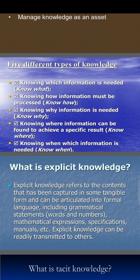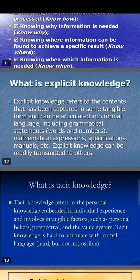The five different types of knowledge. The first is knowing which information is needed. The second is knowing how information must be processed. The third is knowing why information is needed. The fourth is knowing where information can be found to achieve a specific result. The fifth is knowing when which information is needed.